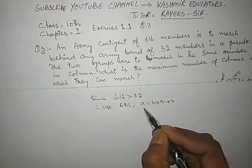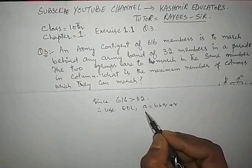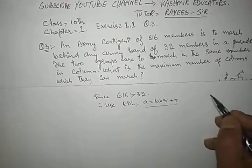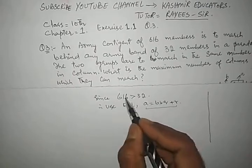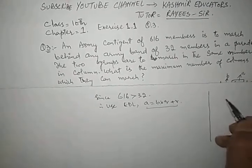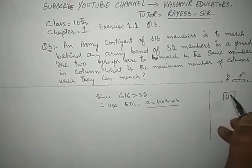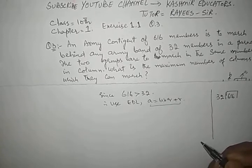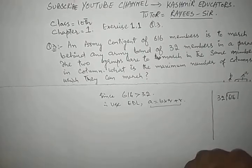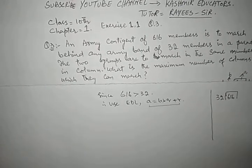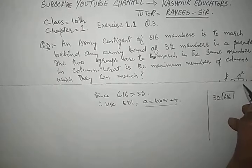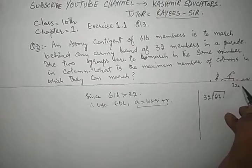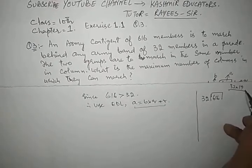Applying Euclid's Division Lemma, we take 616 as the number and 32 as the divisor. So we divide 616 by 32. 32 into 19 gives us the quotient.